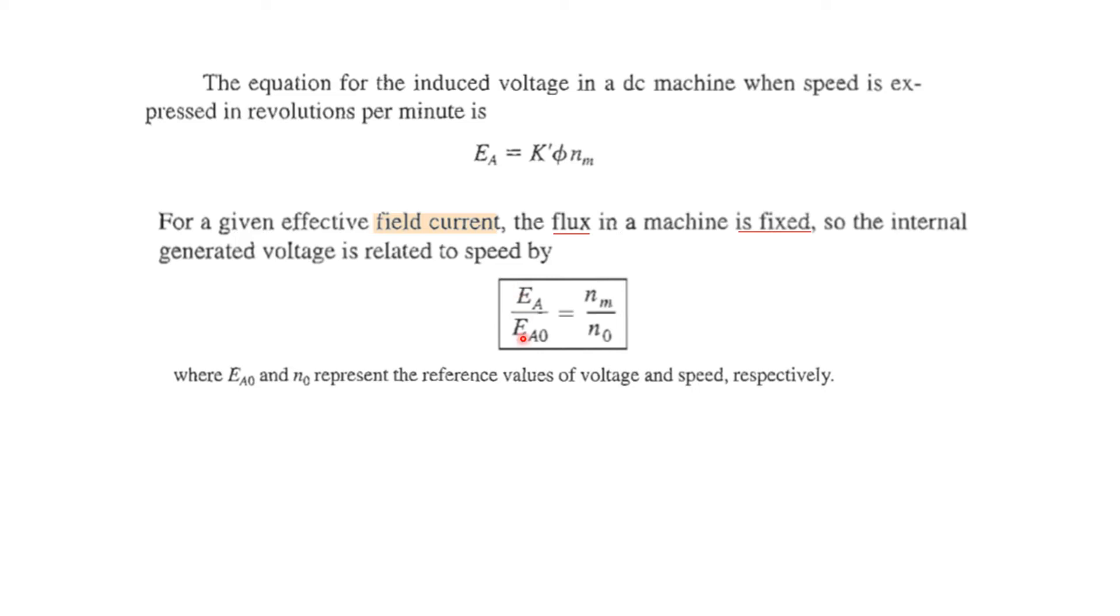And so we can derive a relationship that Ea divided by Ea naught is equal to Nm divided by N naught, where Ea naught and N naught represent the reference voltage and reference speed. So if you know the reference voltage and reference speed, then we can find any speed for a given induced voltage or we can find any induced voltage for a given speed.